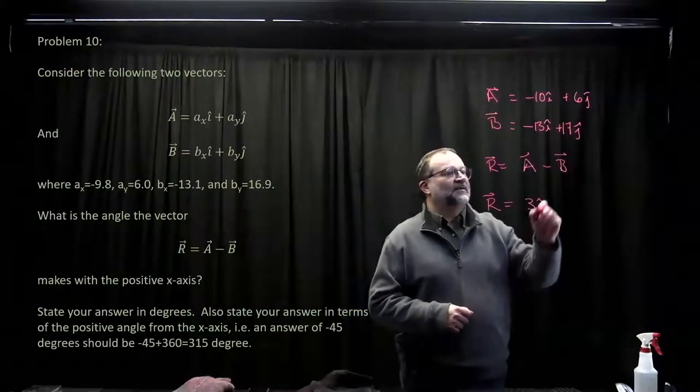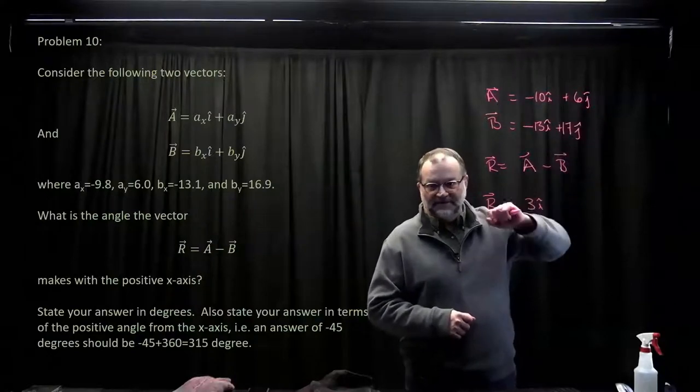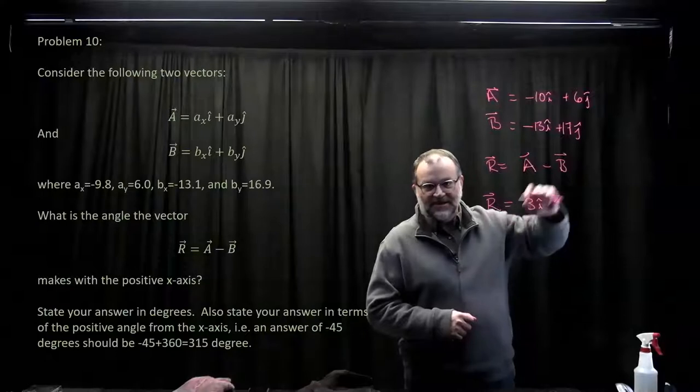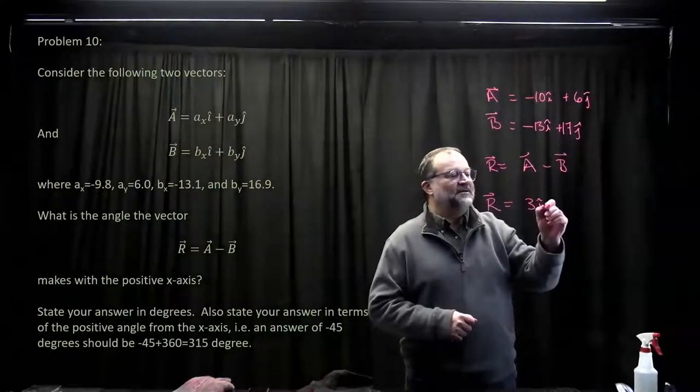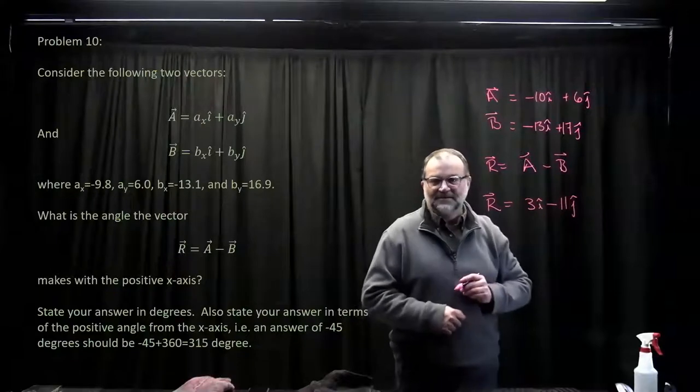OK. For the j-component, we've got a positive 6 minus 17, and so that's going to be minus 11 j-hat. This gives us r.